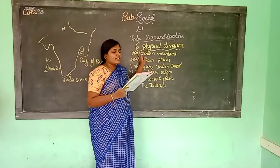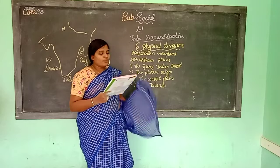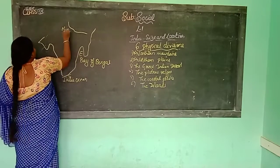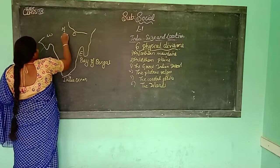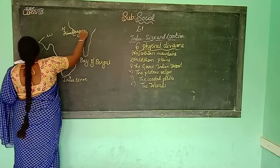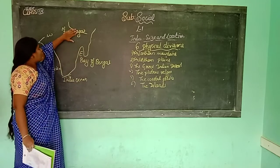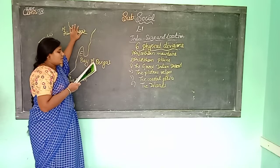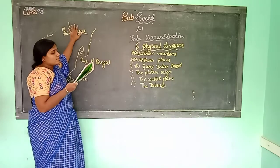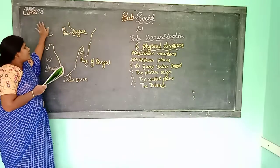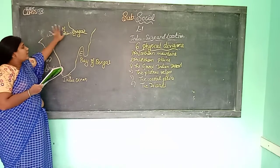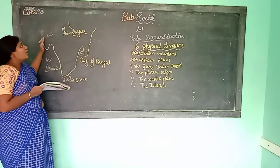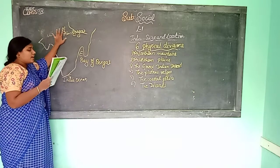The Northern Mountains are also known as the Himalayas. They form the northern boundary of India. These mountains run from northwest to northeast. They protect us from the extreme cold winds that flow from Central Asia.